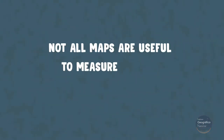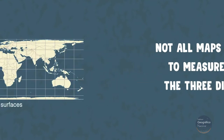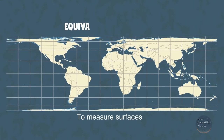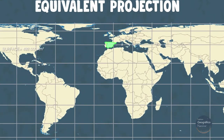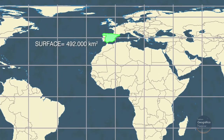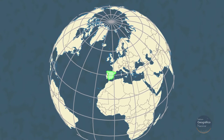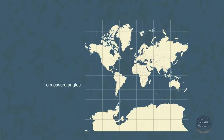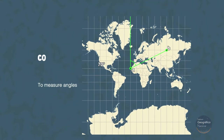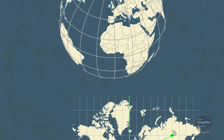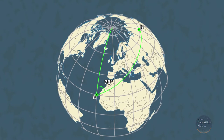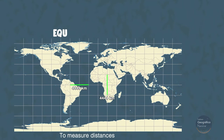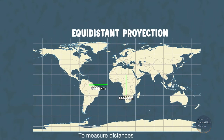But not all maps are useful to measure these dimensions. To measure surfaces, we have to use a map that contains an equivalent projection. A map in equivalent projection can change the shapes, but the value of the areas with respect to reality is maintained. To measure angles, we have to use a map in a conformal projection — on these maps we can measure the angle between any pair of directions. And to measure distances, we have to use a map containing an equidistant projection.